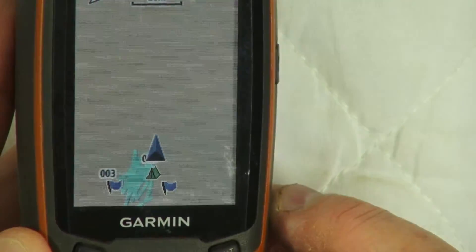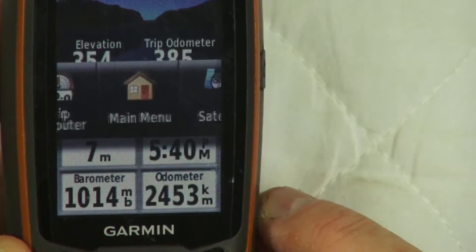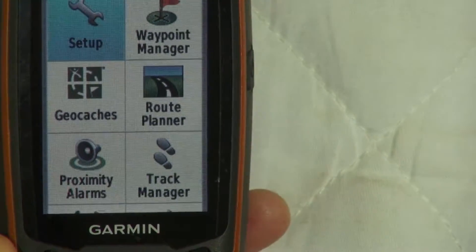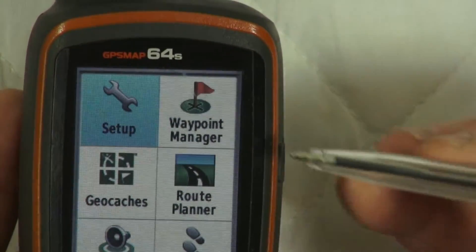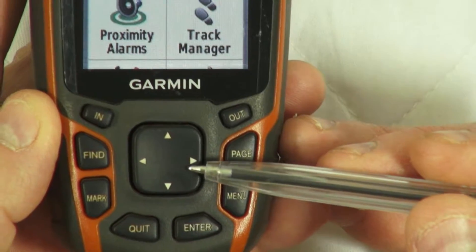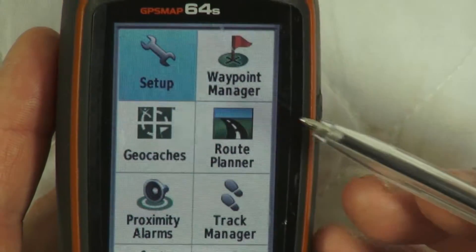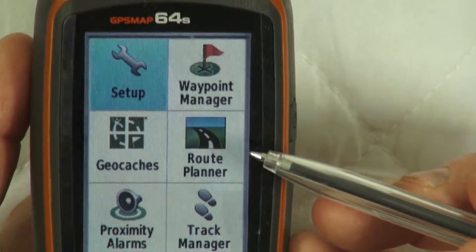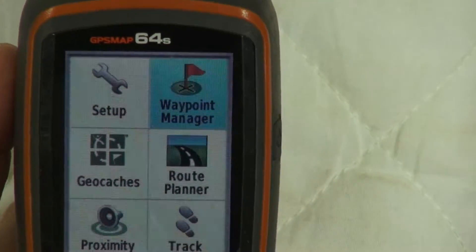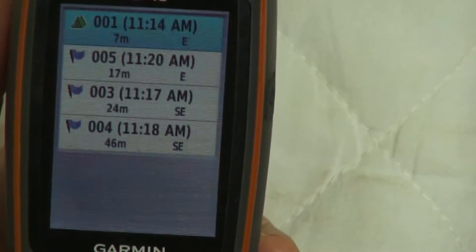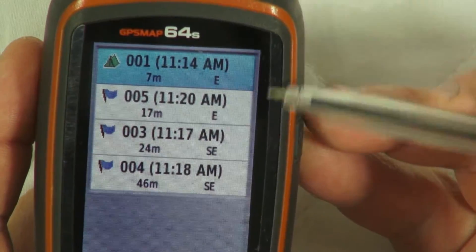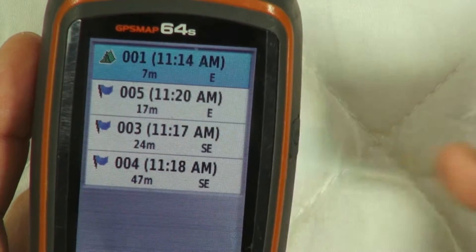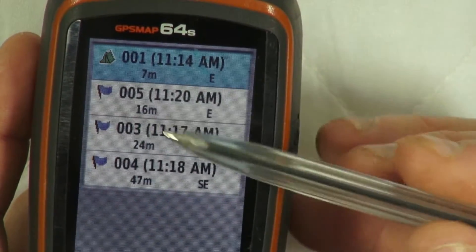Using the rocker, we want to highlight the waypoint manager and press enter. Now we've got our waypoints on the screen.